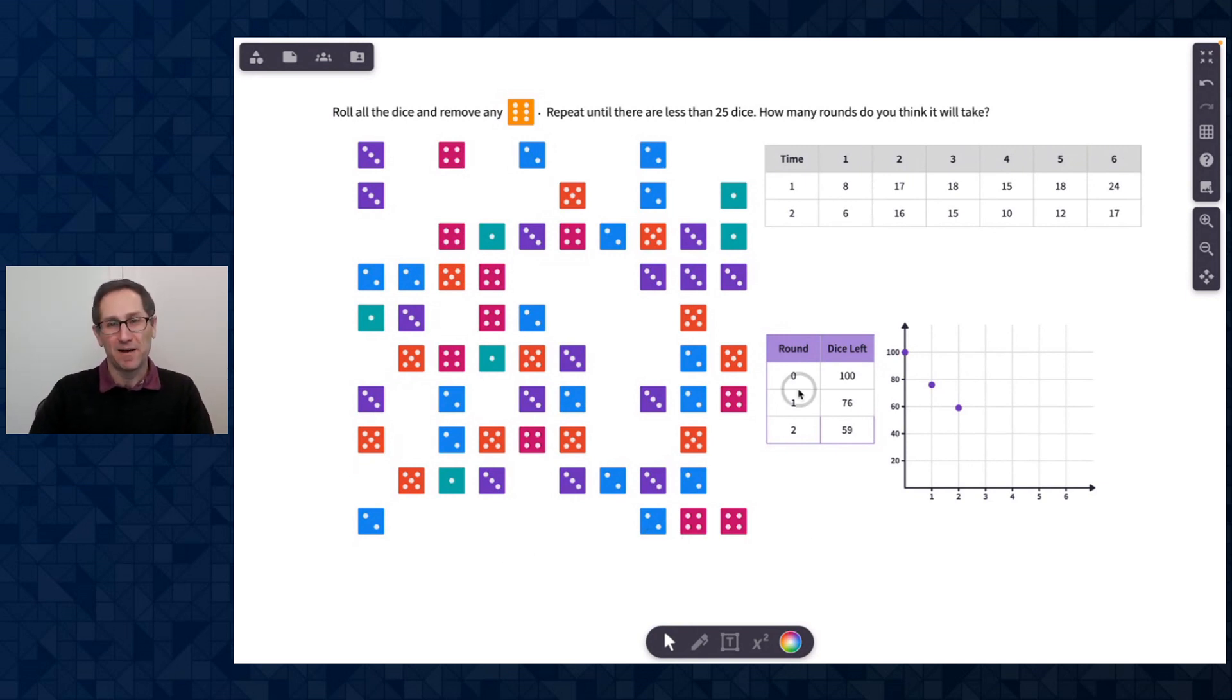Now I'm going to try to make a model here that's going to predict how long it'll take to get to 25 dice or less. And it seems like these points are in somewhat of a straight line. So maybe my first thought is an equation like y equals, let me just make this bigger here. Y equals 100 minus, seems like I'm removing maybe on average 20 dice every time. So maybe it's 100 minus 20x.